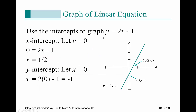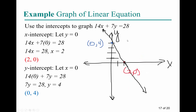Using the intercept method for y = 2x − 1: for the x-intercept, set y = 0, giving 2x = 1, so x = 1/2. For the y-intercept, set x = 0, giving y = −1, with the ordered pair (0, −1). Plot those two points to graph the line.